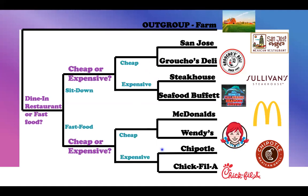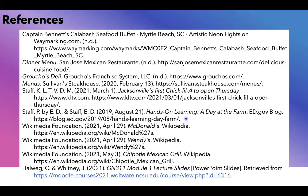So walking through this, we follow our outgroup and then we see the first internal node separating them through cladogenesis — comparing whether it's a dine-in restaurant or fast food. When we go to our dine-in restaurants we can then compare whether it's cheap or expensive. San Jose and Gracho's Deli are most closely related because they're cheap dine-in restaurants. Similarly, Chipotle and Chick-fil-A are most closely related because they're expensive fast food restaurants, and we can follow that back to our outgroup. That's all — thanks for watching!